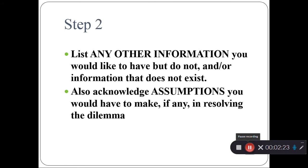Step two, list any information you would like to have but do not, and make a list of information that does not exist. Think about the things that would be helpful to know in order to resolve the problem, but you don't know. You don't have access to that information, or it doesn't exist. Also, acknowledge any assumptions you'd have to make in resolving the dilemma.